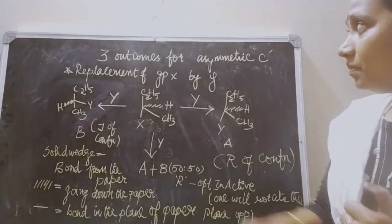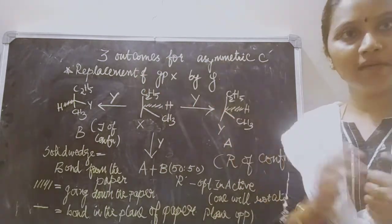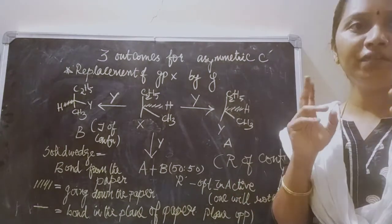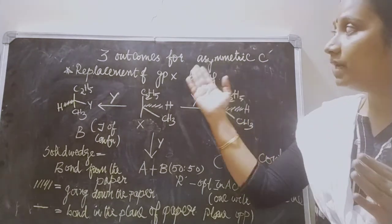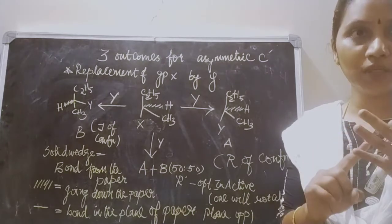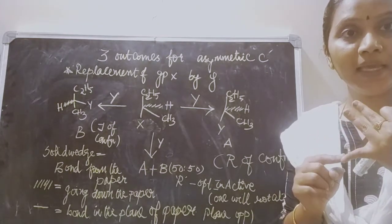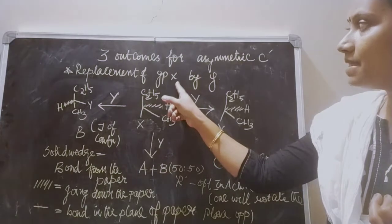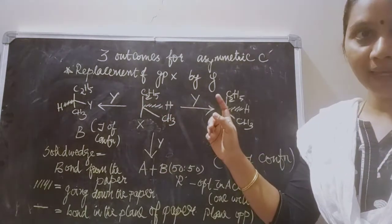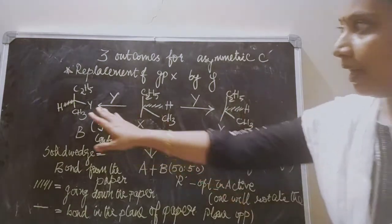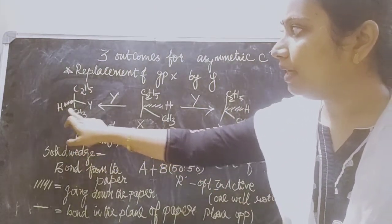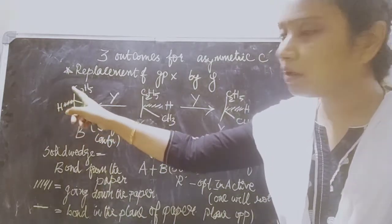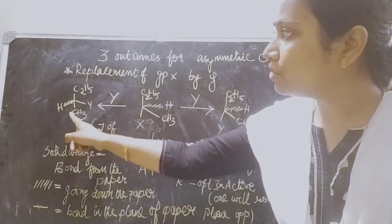There are three outcomes for an asymmetric carbon atom. An asymmetric carbon atom is a carbon atom surrounded by four different groups. When I have an asymmetric carbon atom, there are three possible outcomes — I will get product A, product B, or a mixture AB. The first step involves replacement of group X by group Y. I have a structure with C₂H₅, CH₃, H, and Y around the chiral carbon — shown using solid wedge (projecting from paper), dashed line (going down into paper), and straight line (in the plane of paper). Removing Y and adding X gives a new arrangement.